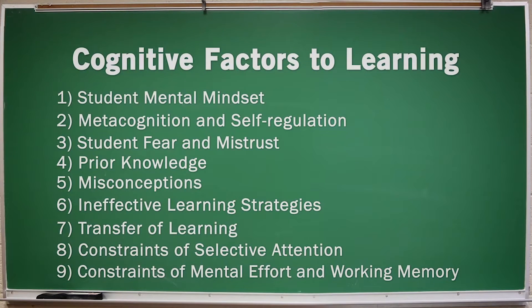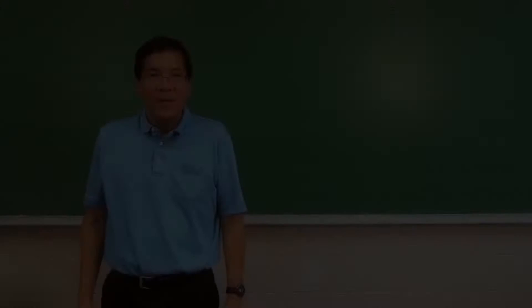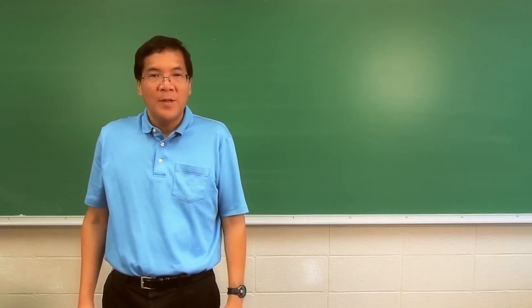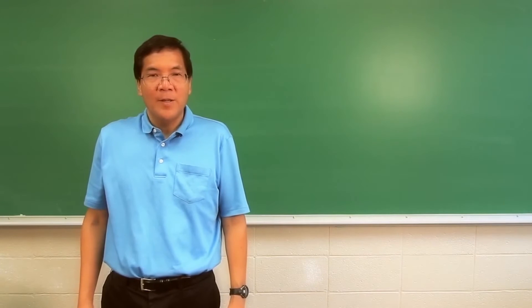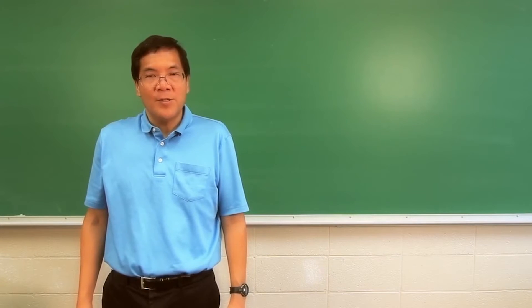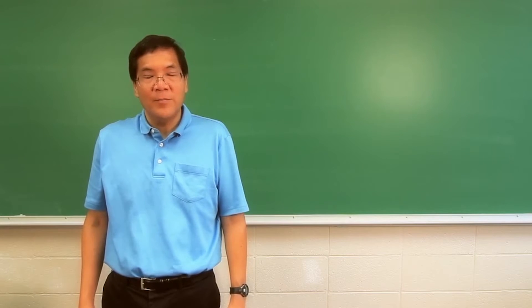We've now discussed nine cognitive factors that affect students' ability to learn. Regardless of which pedagogy teachers use, they must consider all these factors. But here is the key thing: they all interact with each other. Changing one factor changes others. Improving one may worsen another. For example, deeper processing helps learning, but it also increases cognitive load, which hurts learning.